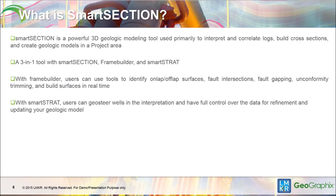Smart Section is a powerful 3D geologic modeling tool used primarily for building cross-sections to correlate logs, create geologic models, and update all that on the fly into the project. It's a three-in-one tool. Smart Section has its own cross-section tool, Frame Builder for building maps, and Smart Strat for doing any geosteering in your project. We're not going to get into Smart Strat in this presentation, but it is another feature available to you.